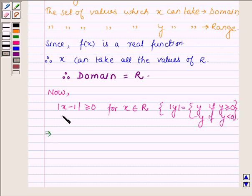So this implies modulus of x minus 1 which is equal to y is greater than or equal to 0 for all x belonging to R and y belonging to R.